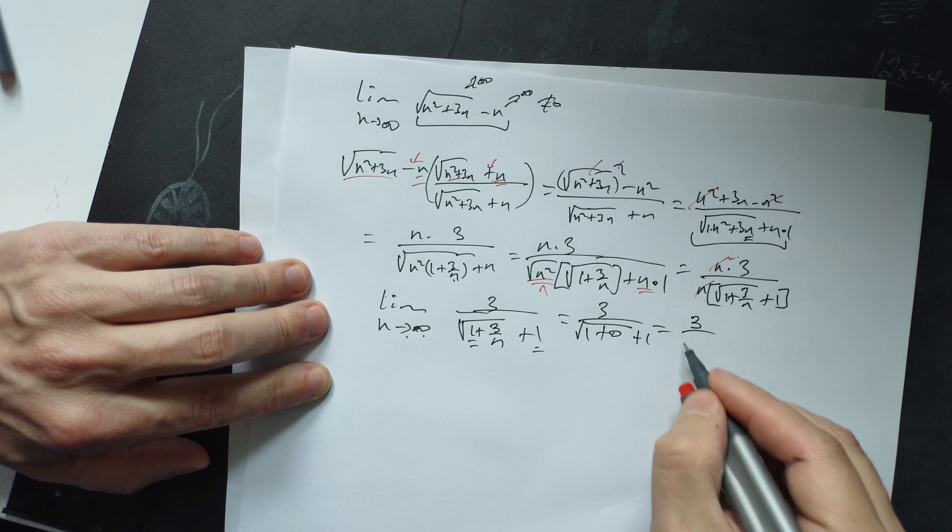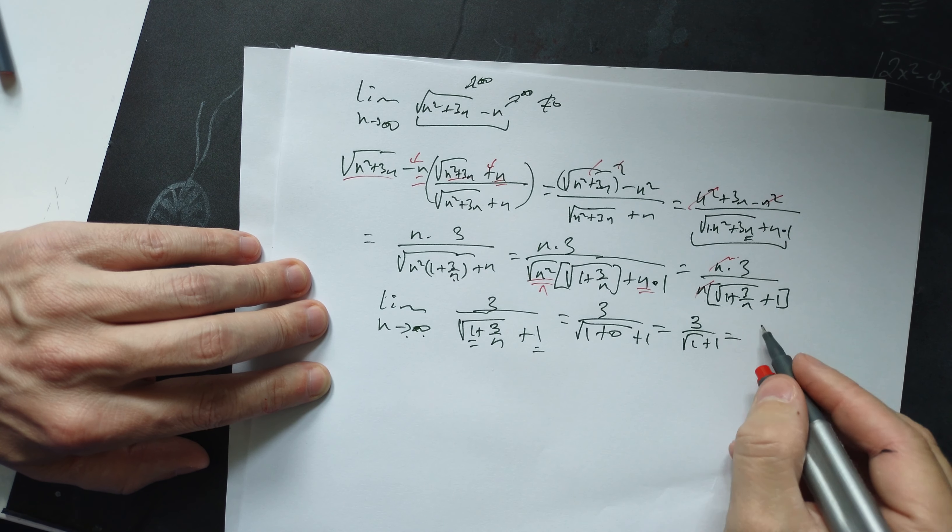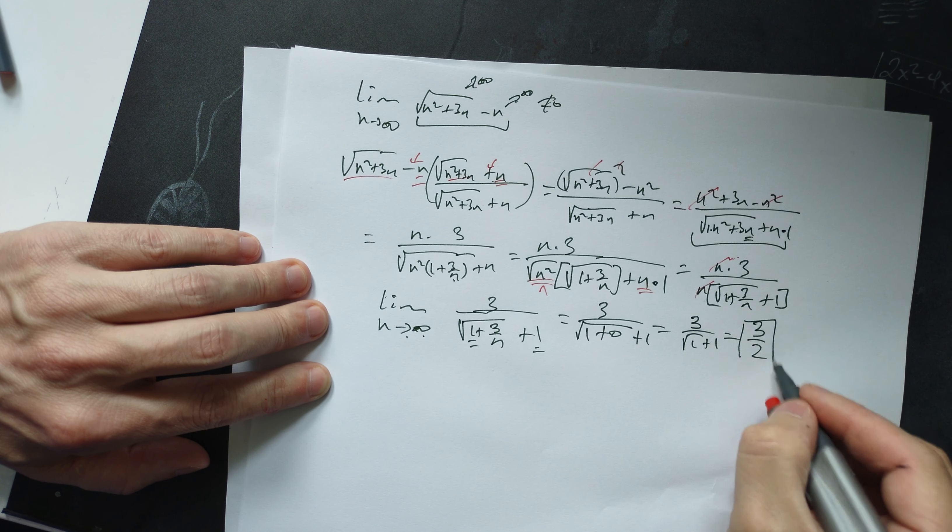So what's left is 3/(√1 + 1) = 3/2. This is the value of the limit.